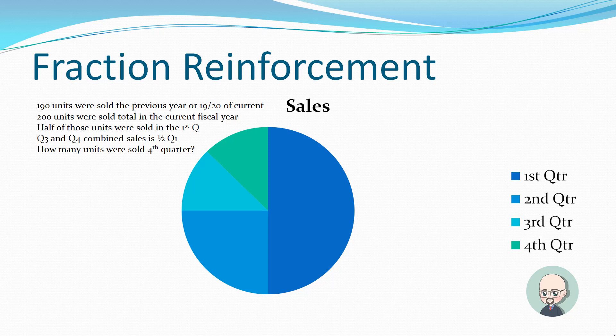It says 190 units were sold the previous year. We don't care about the previous year. They asked about the fourth quarter. That's in this year. We don't care about any previous year. So the 200 units were sold in the current fiscal year. Half of those units were sold in the first quarter. What is one half of 200? That's 100. Quarter three and quarter four combined sales is one half of quarter one. Quarter one was 100. So quarter three and quarter four combined sales is half of quarter one. So it's half of one half. So you could look at the graph and figure it out visually. Or you could look at the numbers and figure it out that way.